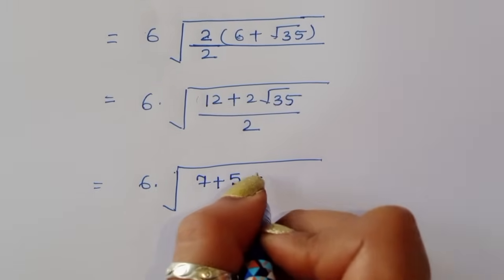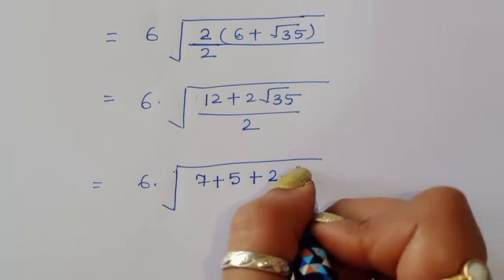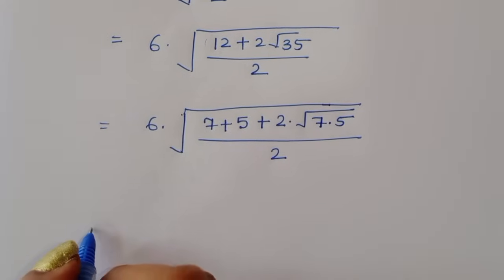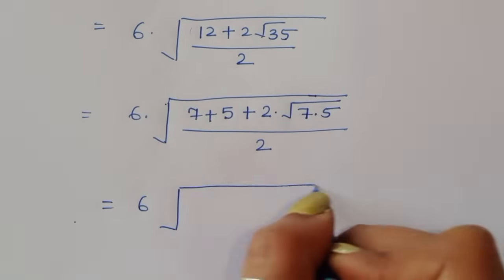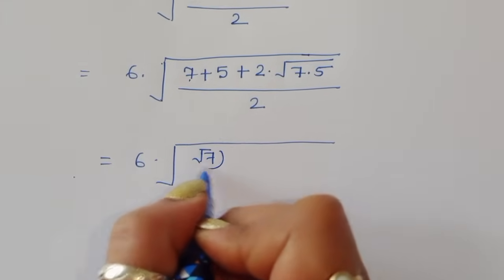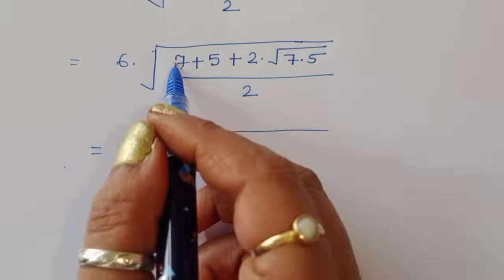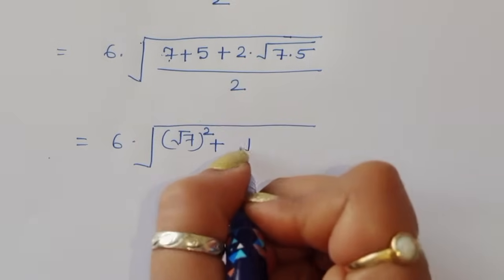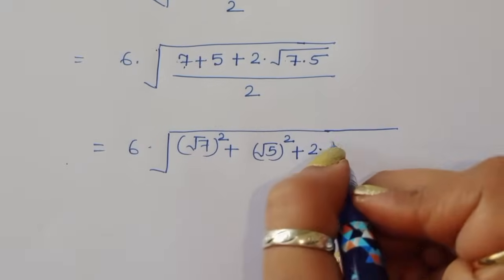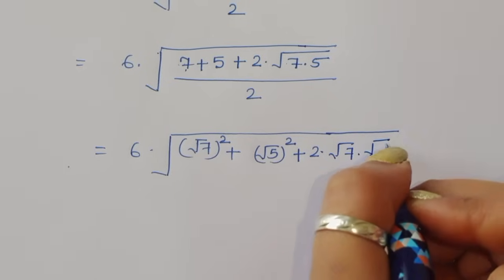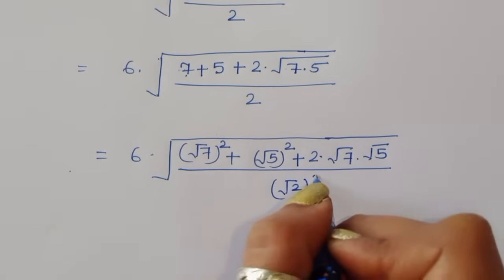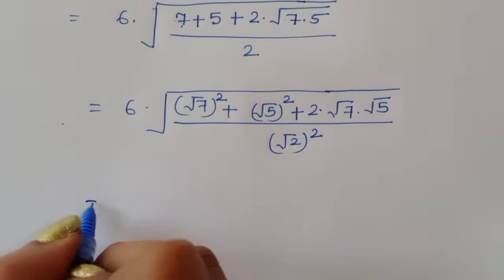So we have 6 times square root of (7 plus 5 plus 2 times square root of 7 times 5) divided by 2. We can write 7 as square root of 7 whole square, and 5 as square root of 5 whole square, and 2 times square root of 7 times square root of 5. In the denominator, 2 is the square root of 2 whole square.